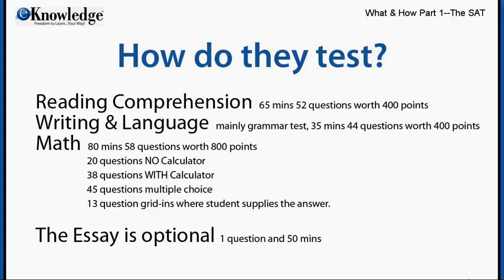Let's take a closer look at the three graded sections. First is the reading comprehension section, also called evidence-based reading. It's a 65-minute section, has 52 questions, and is worth 400 of the 1600 possible points. Second within verbal is the writing and language exam — it's actually a grammar and logic test. It is 35 minutes long, has 44 questions, and is also worth 400 of the 1600 total possible points.